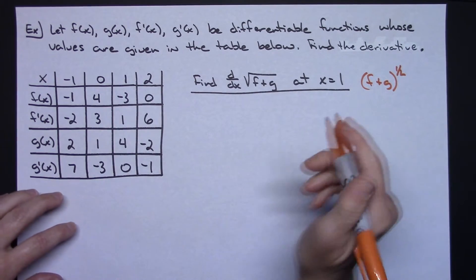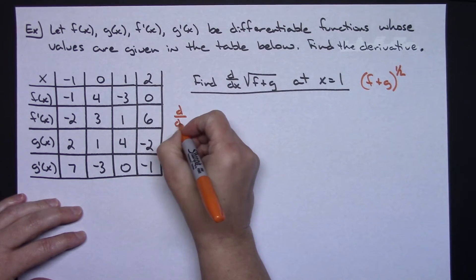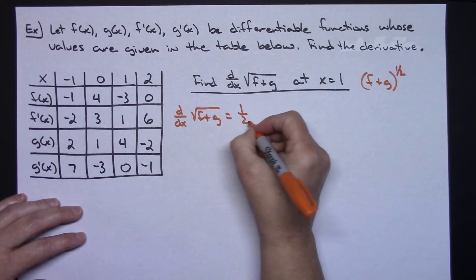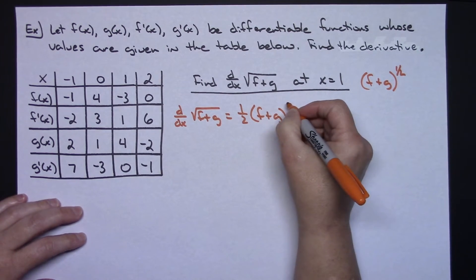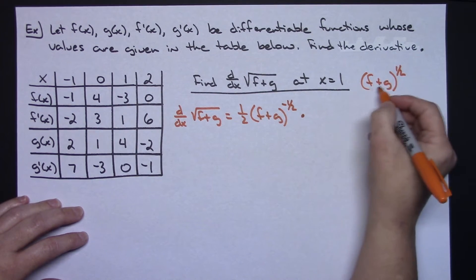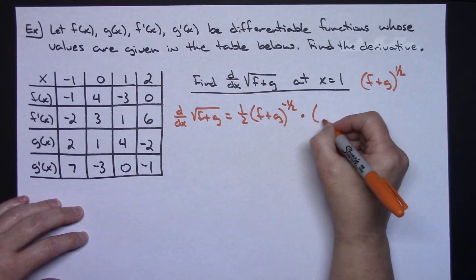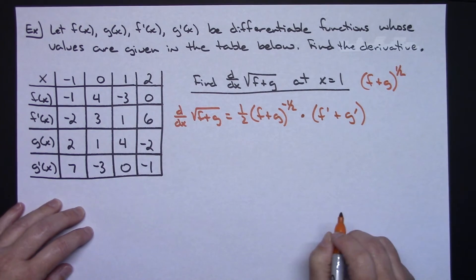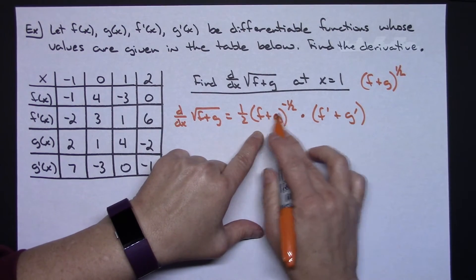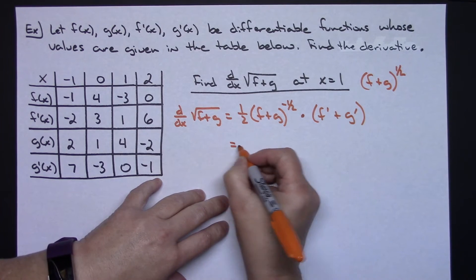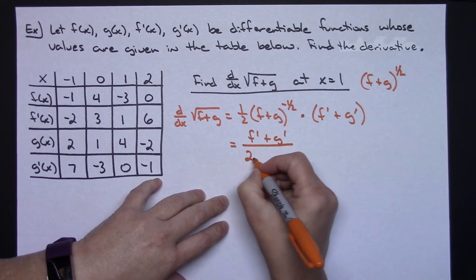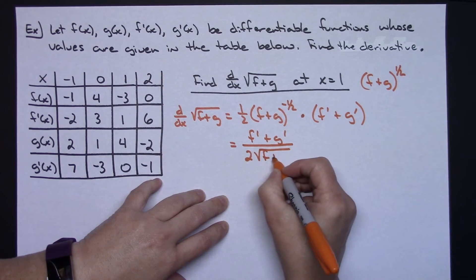Taking the derivative of the square root of f plus g: pull the one-half down, leave the inside function alone — so one-half times (f + g) — subtract one from the exponent giving a negative one-half, and then multiply times the derivative of the inside. The derivative of the inside is f' plus g', because it's the derivative of each one of those. Since I'm going to evaluate this at 1, let's simplify — moving the negative exponent down gives a simplified derivative of (f' + g') all over 2 times the square root of (f + g).